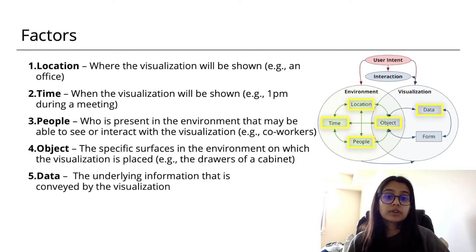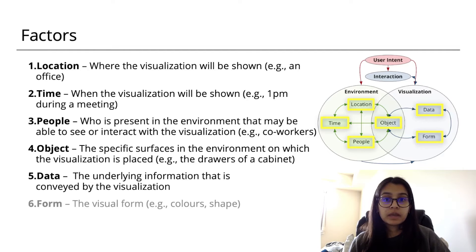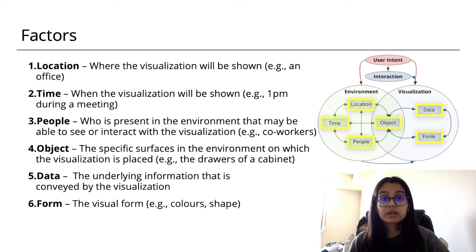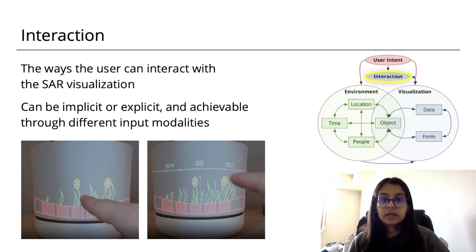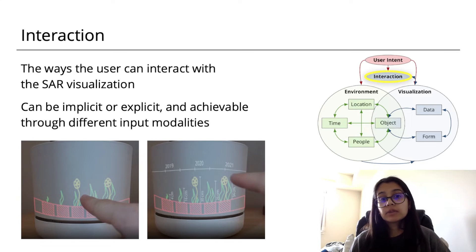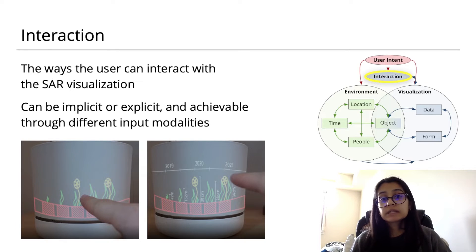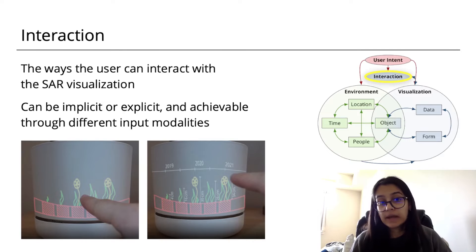Data is the underlying information that is conveyed by the visualization. And the form describes the visual form, like the color, shape, and other elements related to the visual encoding. Last we have interaction, which describes how the user can interact with the SAR visualization. This can be both explicit or implicit, and done through many different input modalities, like voice or touch.